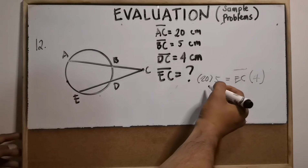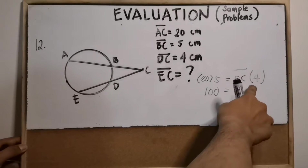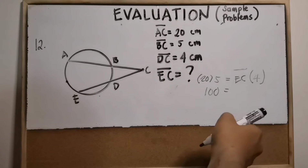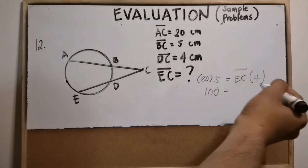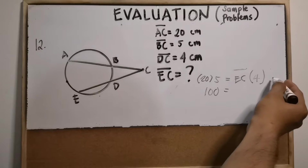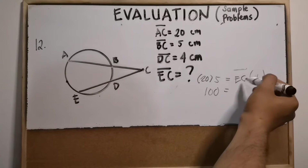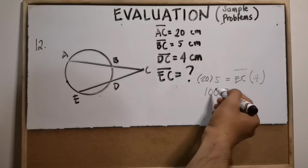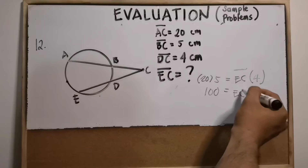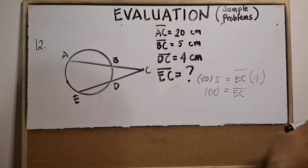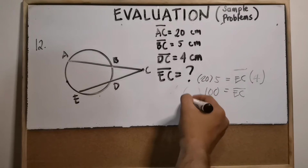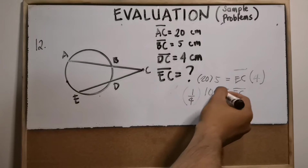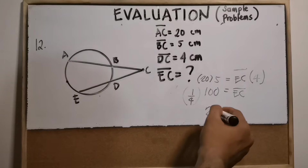So 20 times 5 is 100. To cancel out the 4 on the other side, we divide both sides by 4. That leaves us with segment EC alone on one side, and one-fourth of 100 on the other, which is 25. So segment EC equals 25 centimeters.